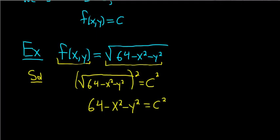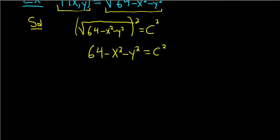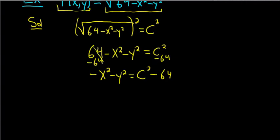Now we can do some more math. We subtract 64 from both sides, giving us negative x squared minus y squared equals c squared minus 64. If you multiply everything by negative 1, all the signs switch. So we get x squared plus y squared, and the negative 64 becomes a 64 minus c squared.